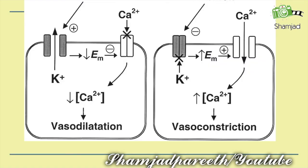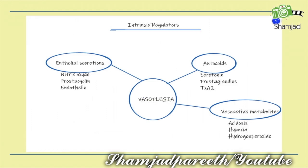Here we can see that when calcium concentration decreases — by moving potassium out and blocking calcium ion intake — there will be vasodilation. And in the next picture, when the concentration of calcium ion increases, there will be vasoconstriction.